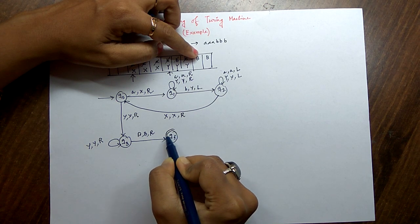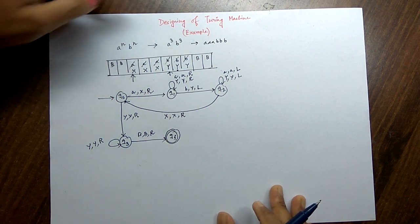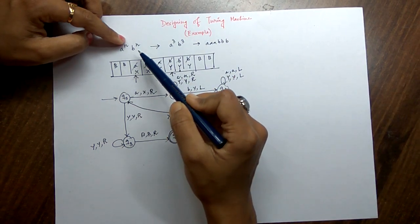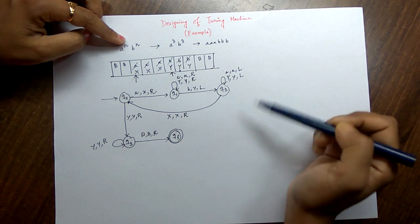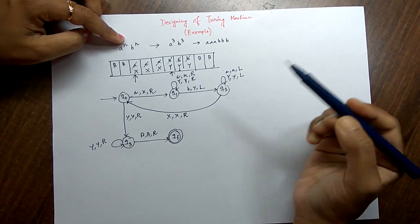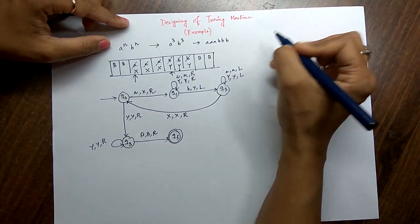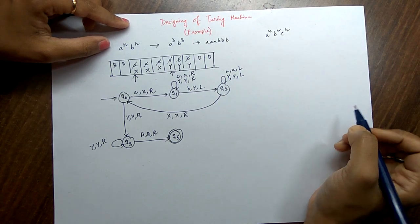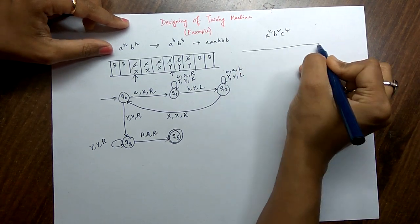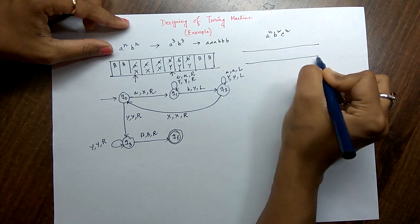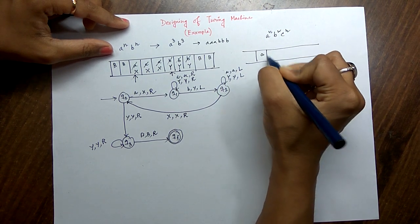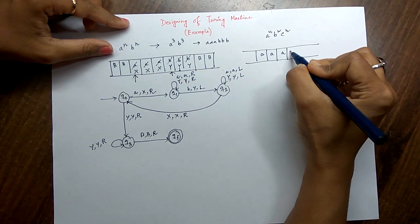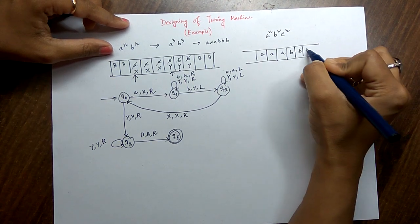Finally we have reached the final state. This is how a to the power n b to the power n can be designed using the Turing machine. In the same way we can design a to the power n b to the power n c to the power n also. For that, I am not going to do it because it is your homework — you can take the example string for designing it.